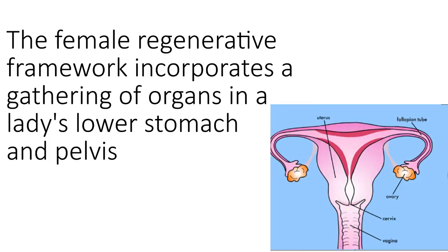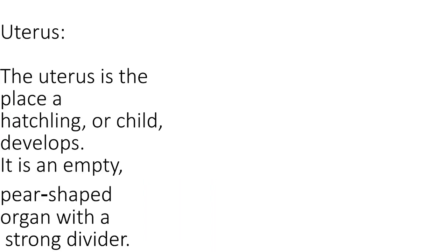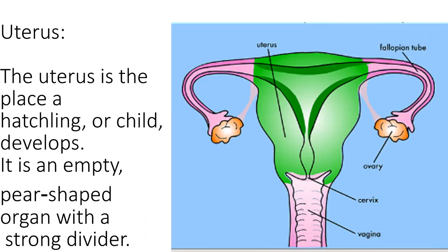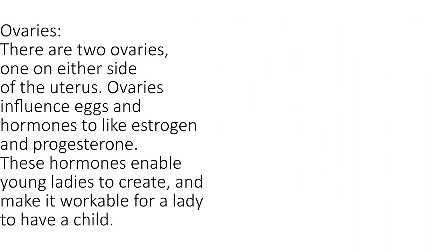The female reproductive system incorporates a gathering of organs in a lady's lower stomach and pelvis. The uterus is the place a fetus, or child, develops. It is an empty, pear-shaped organ with a strong wall.